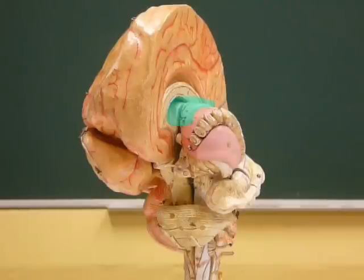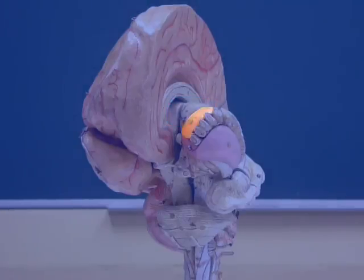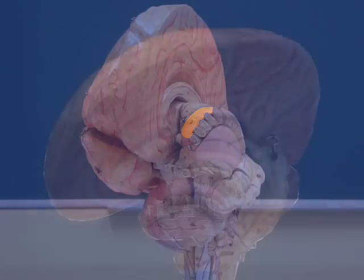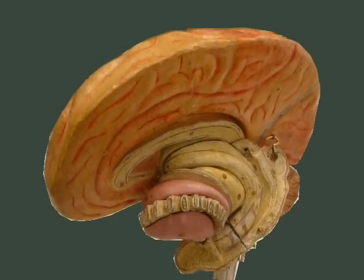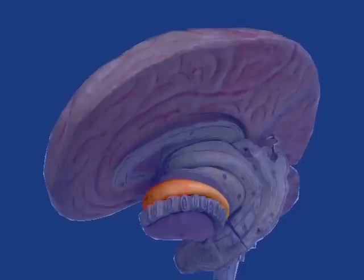Forming the lateral wall of the lateral ventricles is the head of the caudate nucleus. The caudate nucleus has the head of the caudate nucleus, the body of the caudate nucleus, and the tail of the caudate nucleus.